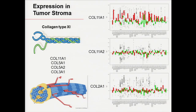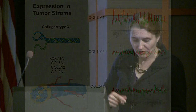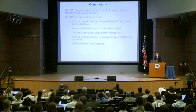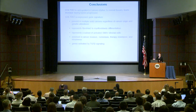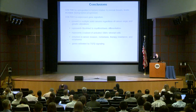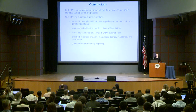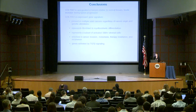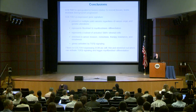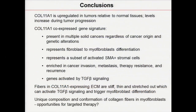What we find in this signature is that collagens 5A1, 5A2, 3A1 and several others are highly upregulated, and what's common to all those collagens is very slow processing of their N-termini, which prevents accretion of additional fibers, resulting in nice thin straight fibers. We don't yet know why these fibers need to be thin or how this mechanically affects tumor progression. To summarize: collagen 11A1 is upregulated in tumors, levels increase during progression, the signature is present in multiple solid cancers regardless of cancer origin, it's activated by TGF-beta signaling, and fibers are stiff and stretched out.